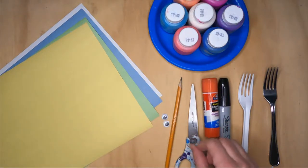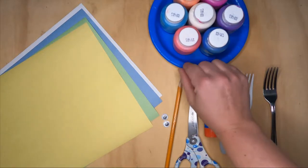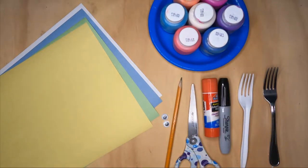You'll also need some googly eyes, a fork, and of course a tray with a little bit of paint. Let's get started.